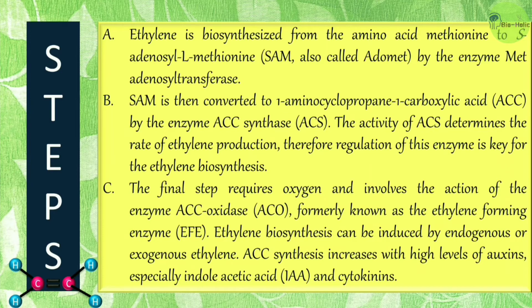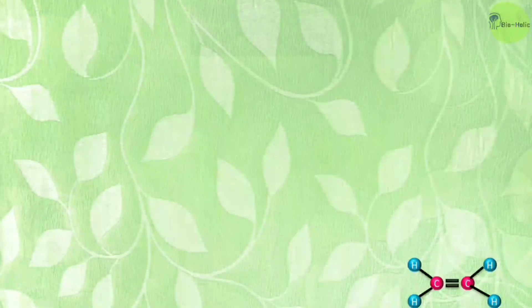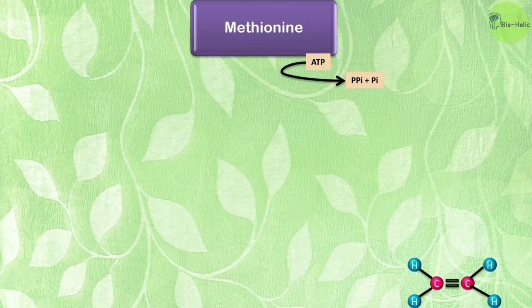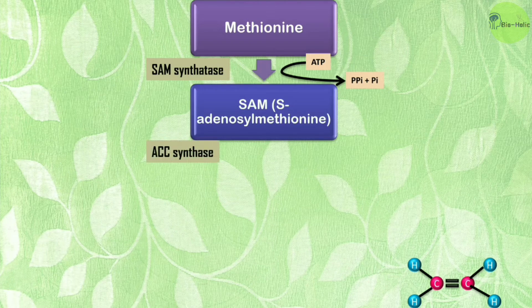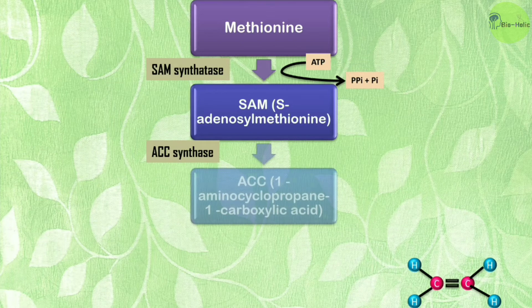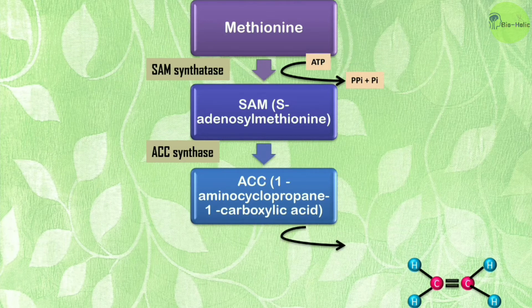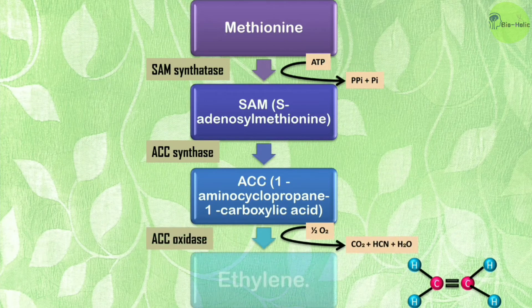Ethylene biosynthesis can be induced by endogenous or exogenous ethylene. ACC synthase activity increases with high levels of auxins, especially indole-3-acetic acid (IAA), and also by cytokinin action. In the first step, methionine is converted into SAM, utilizing ATP and producing inorganic phosphates as a byproduct. SAM synthetase is important for this reaction. In the next step, SAM is converted into ACC by ACC synthase, and in the final step, oxygen is used and ACC oxidase produces ethylene.